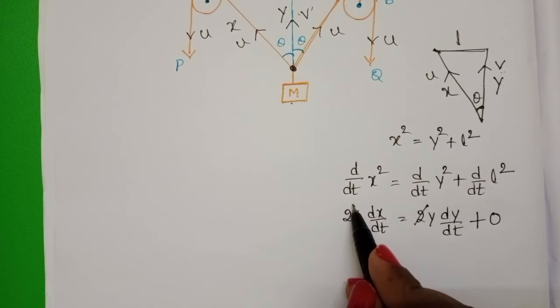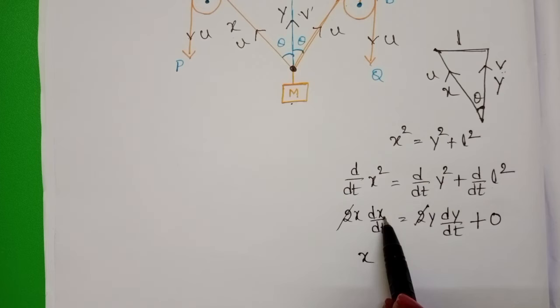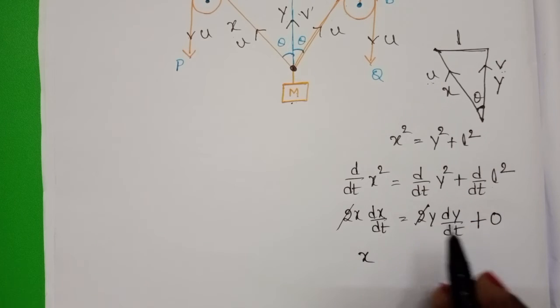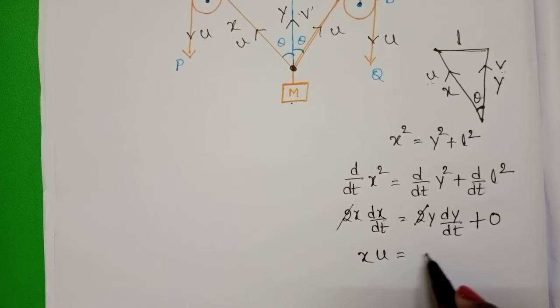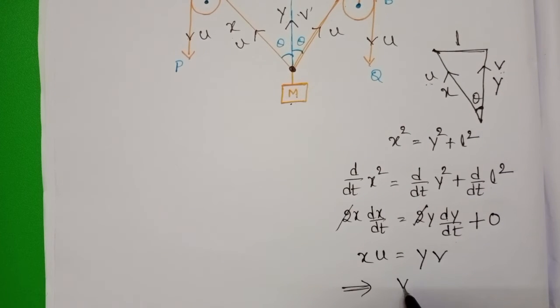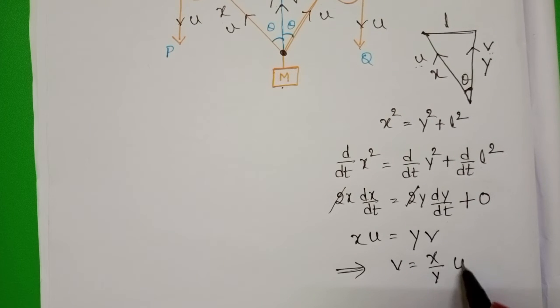On both sides, 2 gets cancelled. X into rate of change of distance is called speed. So along this direction speed is U. DX by dt is equals to U. That is equals to Y into DY by dt is V. We want V. V is equals to X by Y into U.